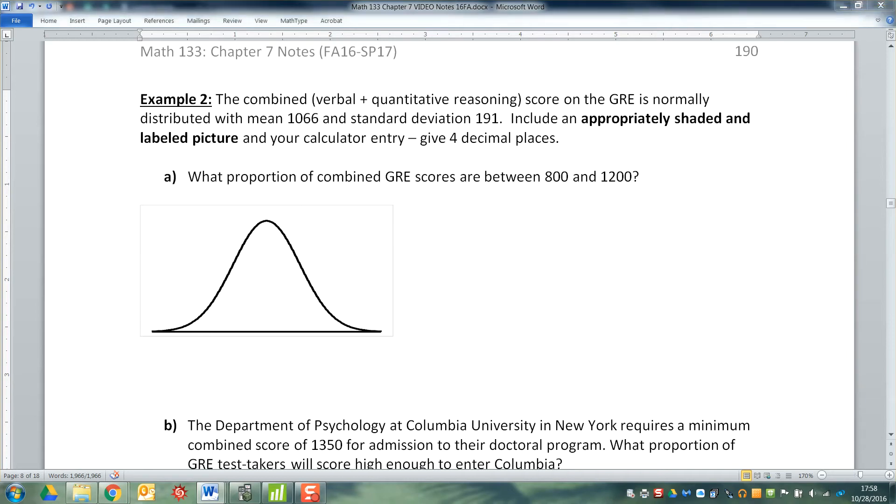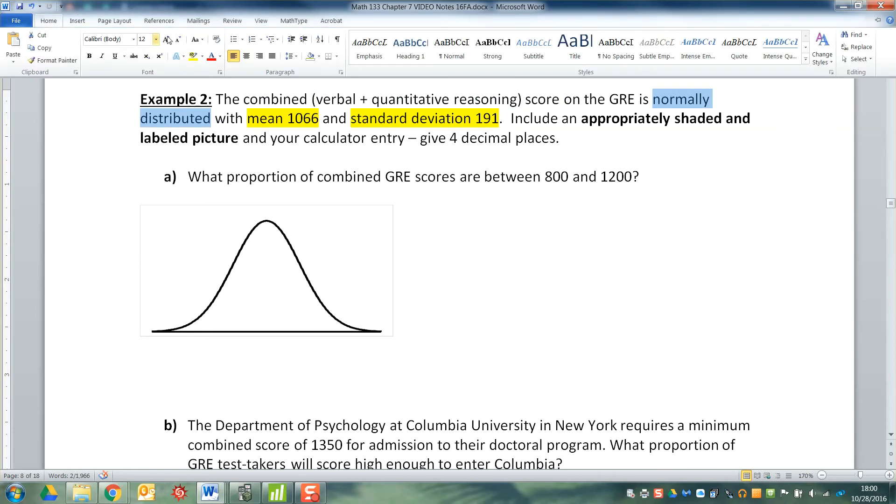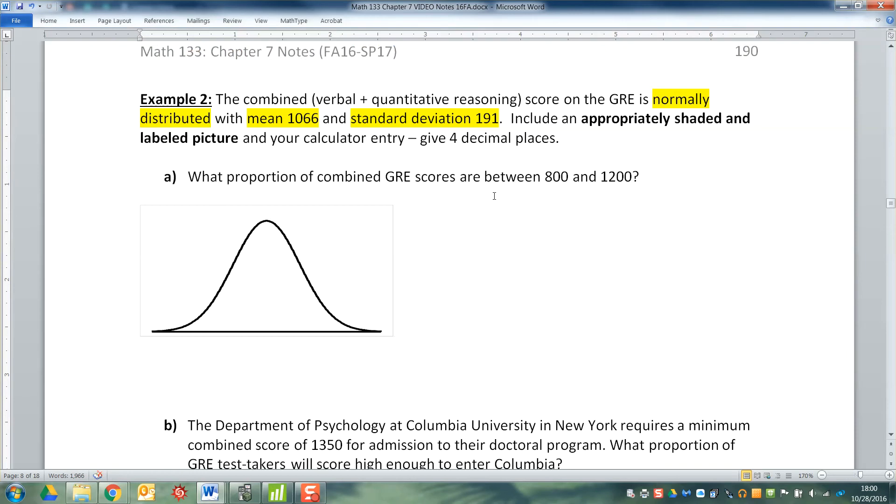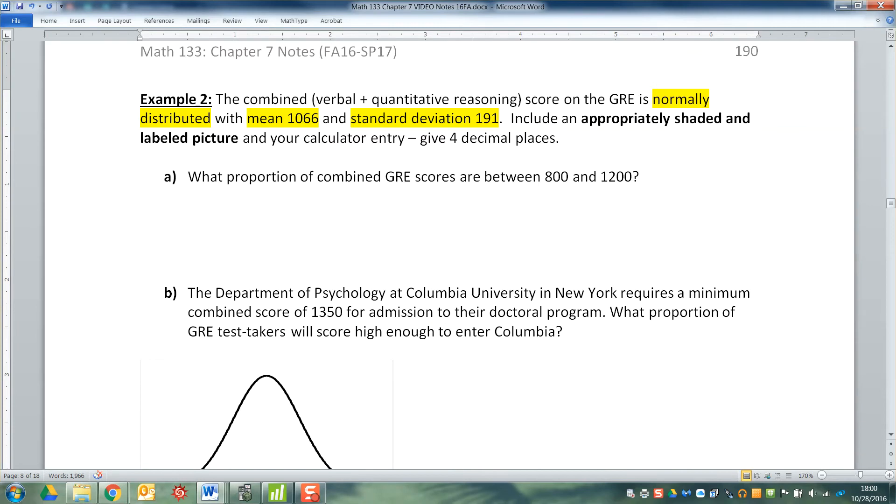What proportion of the scores are between 800 and 1200? Well, in order to appropriately shade and label our graph, we're going to have to realize that we have a mean of 1066 right there and a standard deviation of 191. And of course, there's the magical 'it's normally distributed,' which we couldn't do this problem without, so that would be a problem. So 800 is on the left of 1066 and 1200 is on the right.